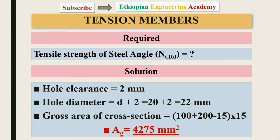The hole clearance is 2 mm and the hole diameter is 22 mm (20 + 2). The gross area of the cross section equals (100 + 200 − 50) × 50 — where 50 is the thickness. When dealing with an angle section we subtract the thickness from the perimeter. This gives the gross area as 12,500 mm², approximately.